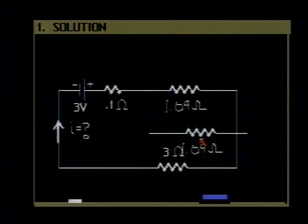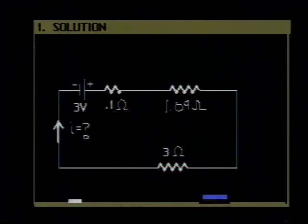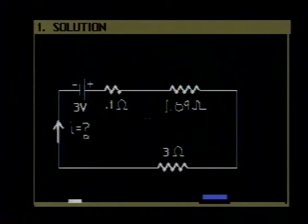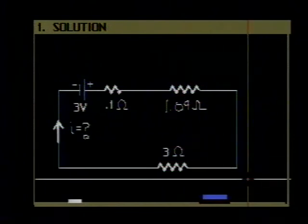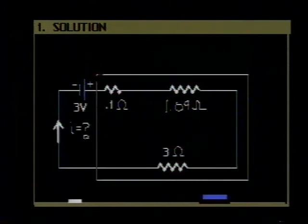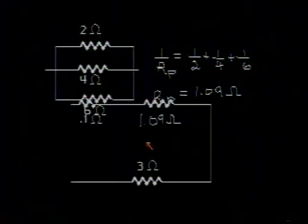Now we have three resistors in series. 0.1 ohm resistance, which is the internal resistance of the battery, 1.09 ohms and 3 ohms. Again, let's take this part of the circuit and we will add those resistors up.